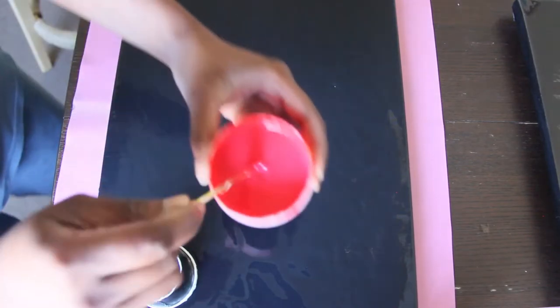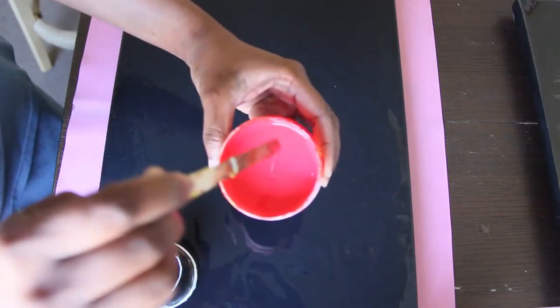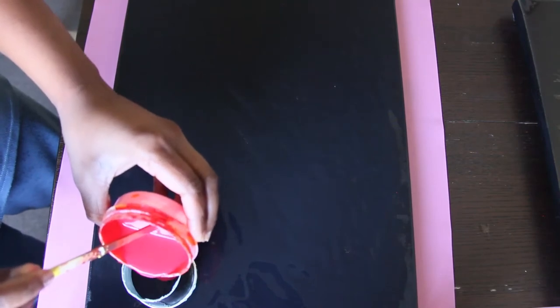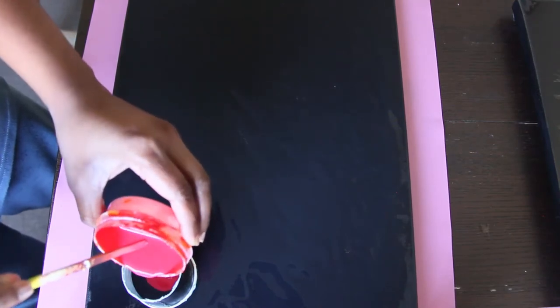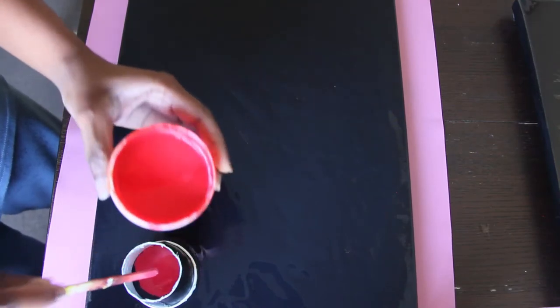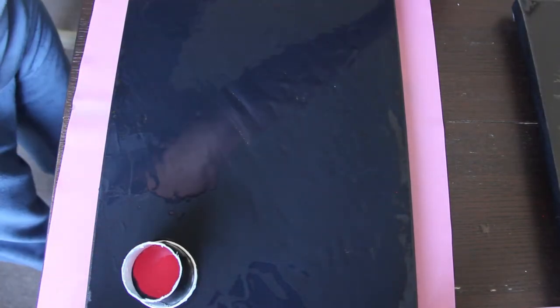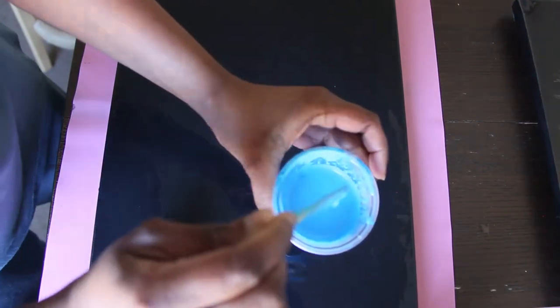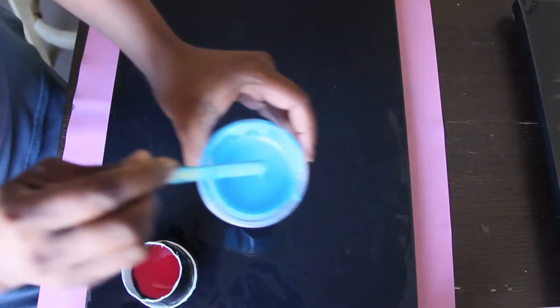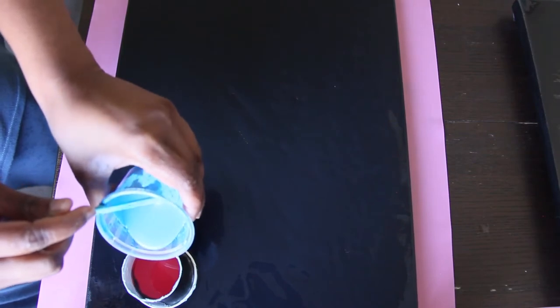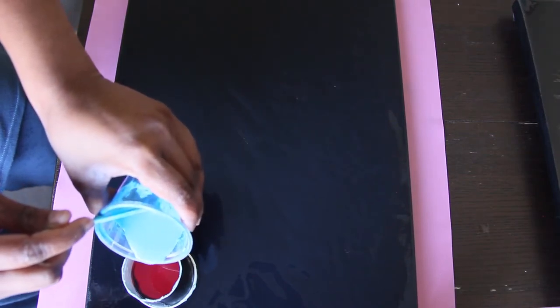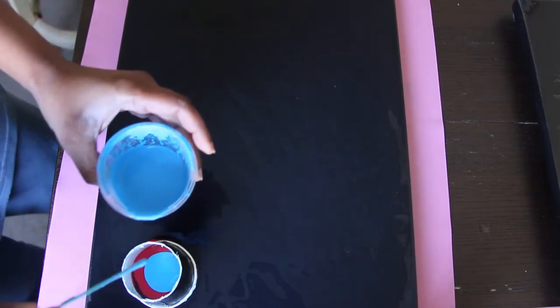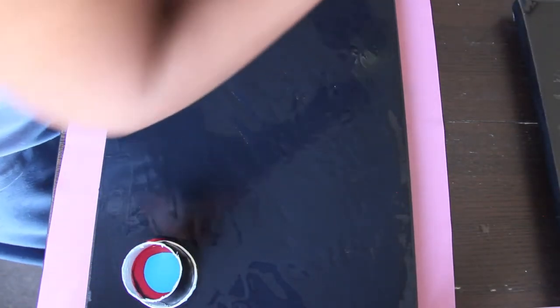First of all I'm adding the carmine red. It's kind of like a dark watermelon color, it's a beautiful color. So I'm just adding a little bit and then I'm gonna add sky blue and then bright yellow.